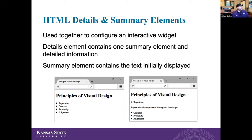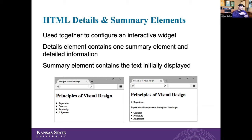HTML details and summary elements — we use these together to configure an interactive widget. The detail element contains a summary element and detailed information. If you've ever seen something with a little arrow dropdown where you click on the arrow and it opens up — kind of an accordion effect — this is nice for pages where you want to visually hide information initially. Maybe if you have a couple paragraphs, it's too much to display at once, so you use the accordion to let the user click to open the nested text.